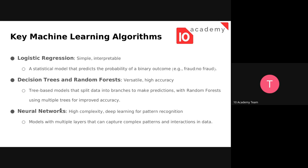The key machine learning algorithms include logistic regression — a simple and interpretable statistical model that predicts the probability of a binary outcome like fraud or not fraud. Decision trees and random forests are versatile, high-accuracy tree-based models that split data into branches to make predictions. With random forest, many decision trees are combined to improve accuracy. Neural networks have high complexity and use deep learning for pattern recognition — they are multi-layered and can capture complex patterns and interactions in data.